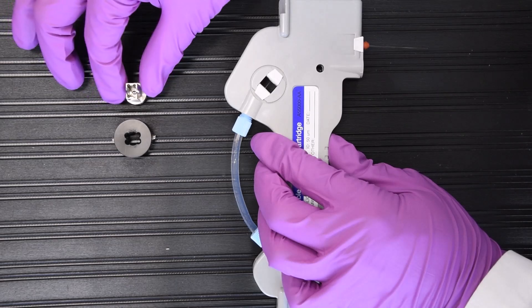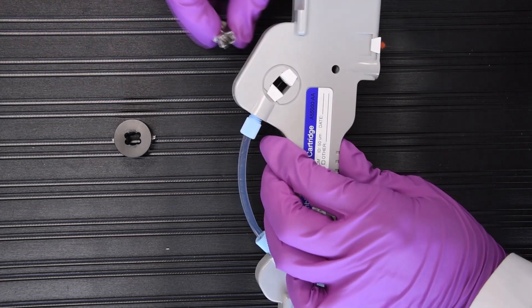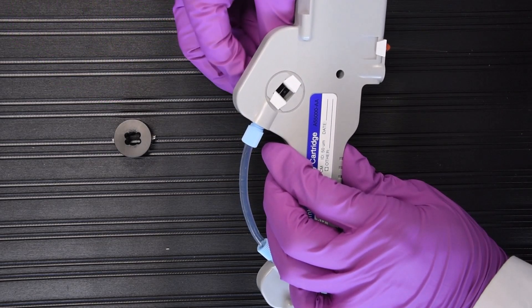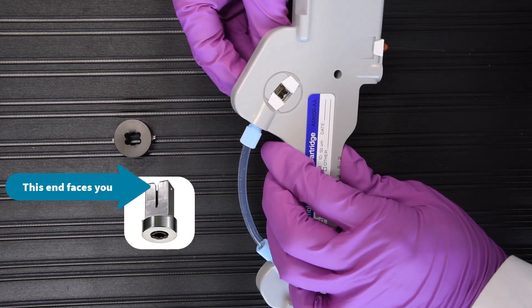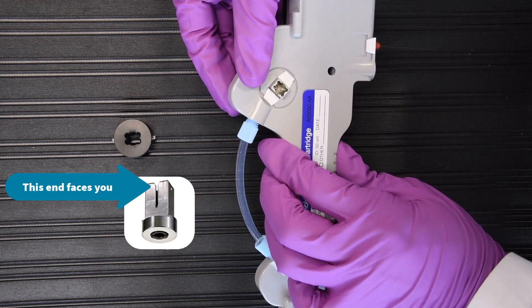To begin, take the metal LIF aperture and insert it into the cartridge from the back, making sure that the rectangular end is facing you once it is pushed through to the front.